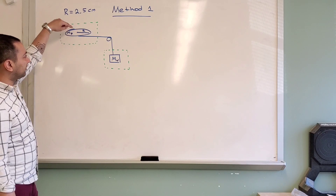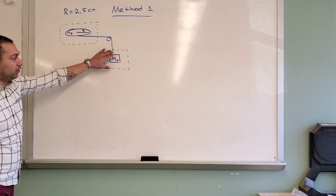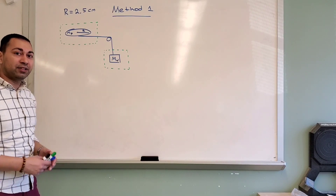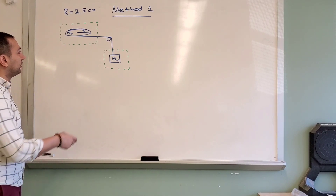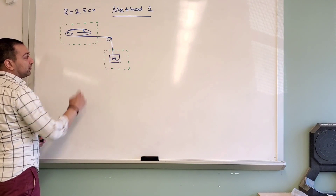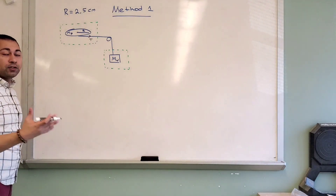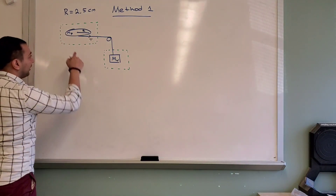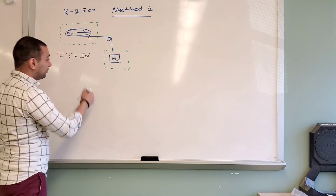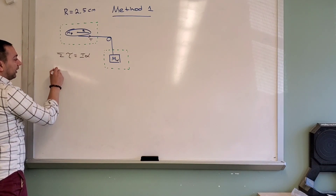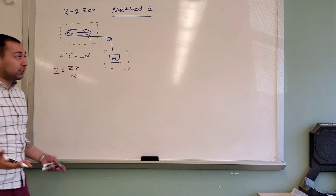We've got a pulley system with the pulley radius r given by 2.5 centimeters, attached to a variable mass that we'll be changing to see how the acceleration is affected. To solve for I using rotational dynamics, you draw a free body diagram for both objects. For the pulley, there's only one force acting on it — the force of tension — and that's what causes the torque. The sum of torques equals I times alpha. Since it's spinning faster and faster there must be an angular acceleration, so I equals the sum of torques divided by alpha.